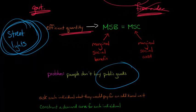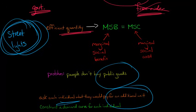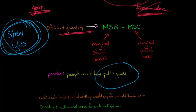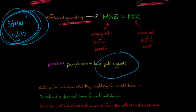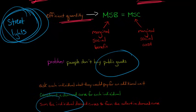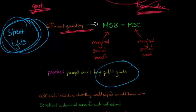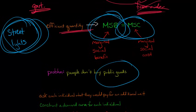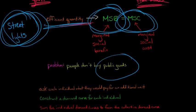One way we could do it is to ask each individual, or try to figure out hypothetically, what would be the marginal benefit to each individual — how much would they pay for one additional streetlight under different quantity scenarios. Once we know the preferences of the people, we can put together a demand curve for each person in the neighborhood, then sum those demand curves together to form what's called the collective demand curve. That collective demand curve represents the marginal social benefit, and where it equals marginal social cost — where the two curves intersect — that's the efficient quantity of the public good.